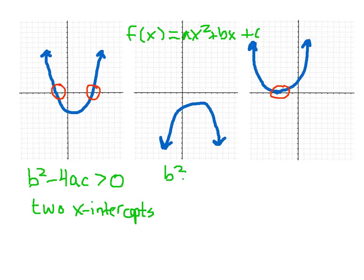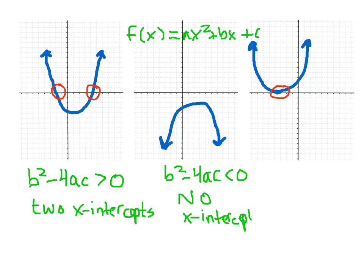When b squared minus 4ac — our discriminant — is less than zero, then we're going to have no x-intercepts. Because when it was less than zero, we had two complex solutions. And if we have a complex solution, then a complex number satisfies the function equal to zero. With the regular rectangular coordinate system, we cannot graph complex numbers.